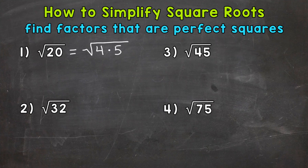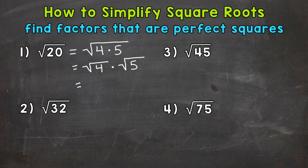The multiplication or product property of square roots lets us split this — we can write it as the square root of 4 times the square root of 5. That's equivalent to the square root of 20; we're not changing the value at all. Now we can take the square root of our perfect square 4. The square root of 4 is 2. Bring down our square root of 5 because we cannot simplify that any further. So our simplified answer is 2 times the square root of 5, or 2 square root 5.